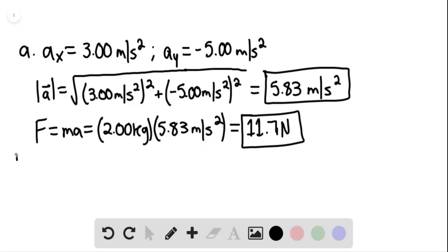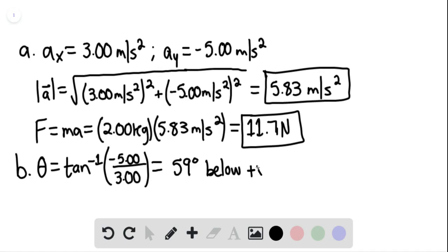For part B, the direction of the force is the same as the direction of the acceleration, given that mass is a scalar. This is arctan of negative 5.00 divided by 3.00, giving us 59 degrees below the positive x-axis.